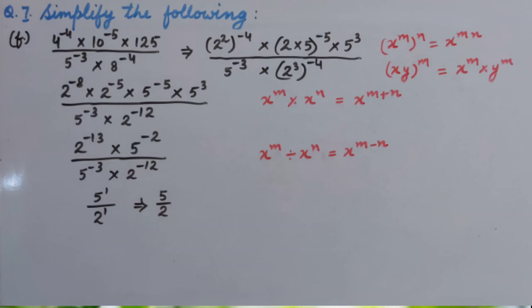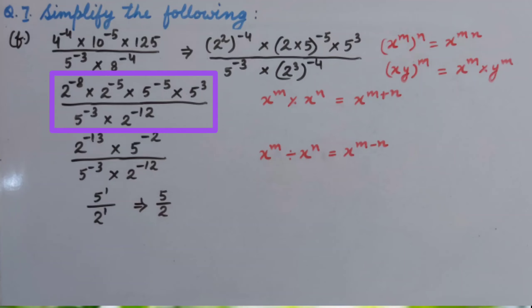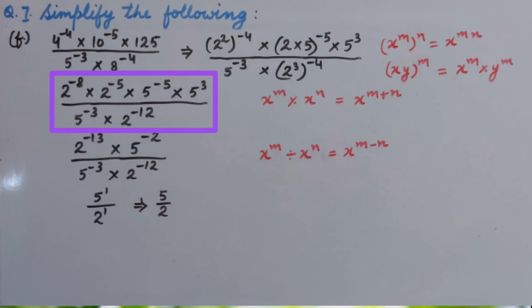Power on power. So we use the law: X raised to the power M whole raised to the power N equals X raised to the power MN. And for whole power of a product: XY whole raised to the power M equals X raised to the power M multiplied by Y raised to the power M. Hence we get 2 raised to the power minus 8, multiplied by 2 raised to the power minus 5, multiplied by 5 raised to the power minus 5, multiplied by 5 raised to the power 3 upon 5 raised to the power minus 3, multiplied by 2 raised to the power minus 12.